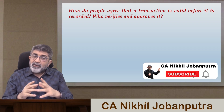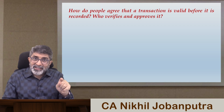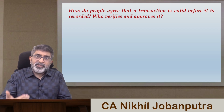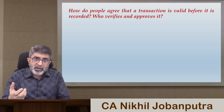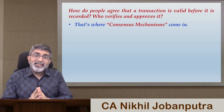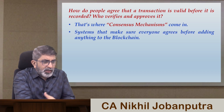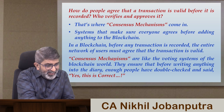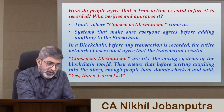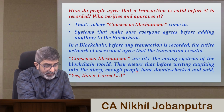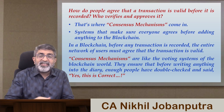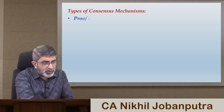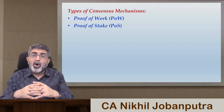We learned that once a transaction is entered it cannot be modified, altered, or deleted — it's permanently there. So before it is placed into the system, who is going to check it? That is where consensus mechanisms come into picture. Consensus mechanisms are like voting systems of the blockchain world — they ensure that before writing anything into the ledger, enough people have double-checked and said yes, this is correct.